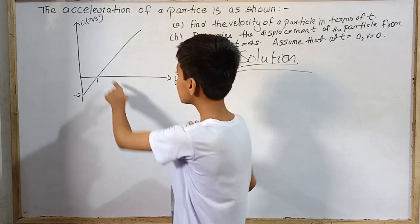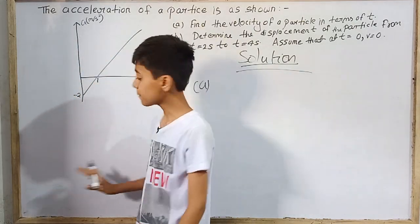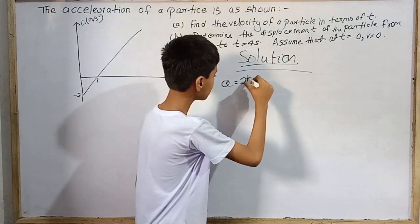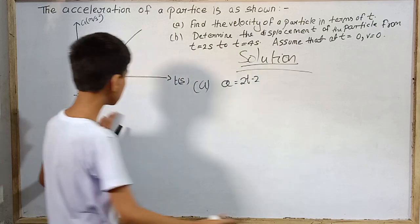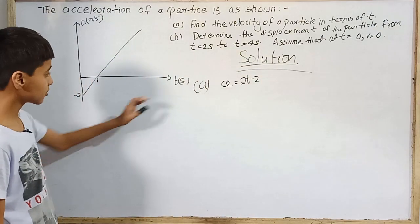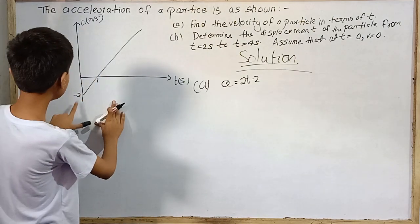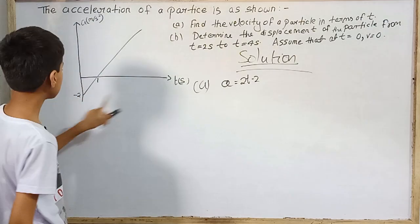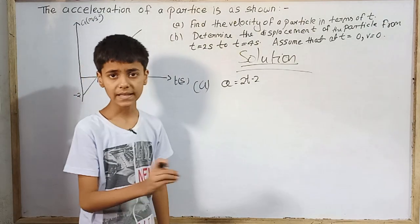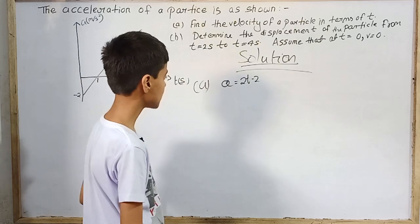If I guess correctly, putting the following conditions, the acceleration will be 2t minus 2. The method of finding it is by putting the values: at t equals 0 it is minus 2, at t equals 1 it is 0, and trying to apply the mathematics. So here we have the acceleration 2t minus 2.